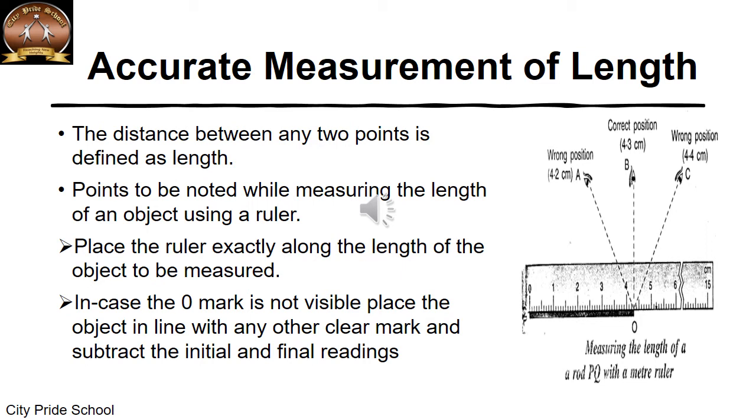And one end of the ruler should be at the mark 0. The one end of the line or whatever you are measuring should be at the mark 0 of the ruler. And then you are going to measure the other side, the other end.